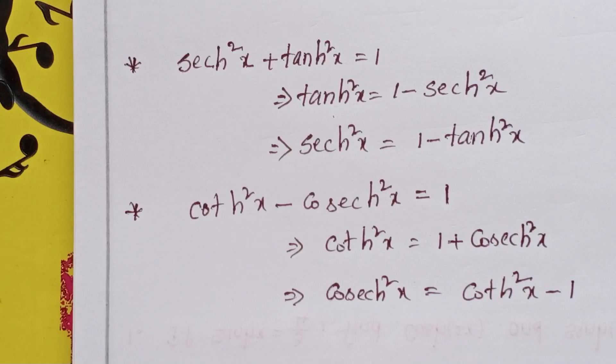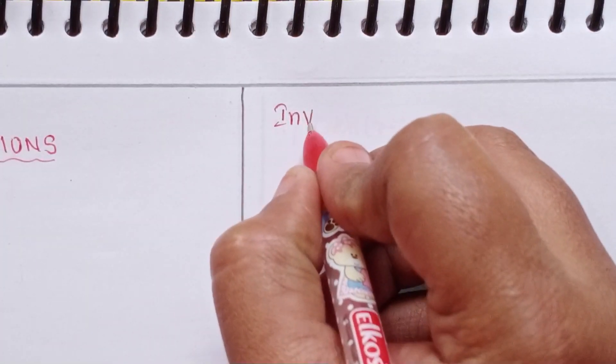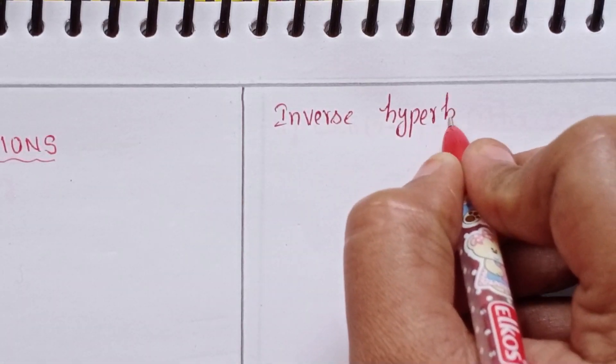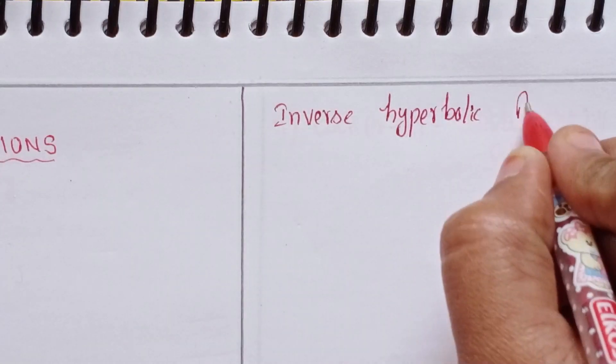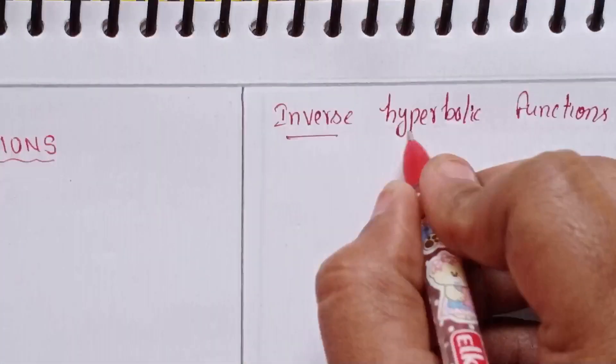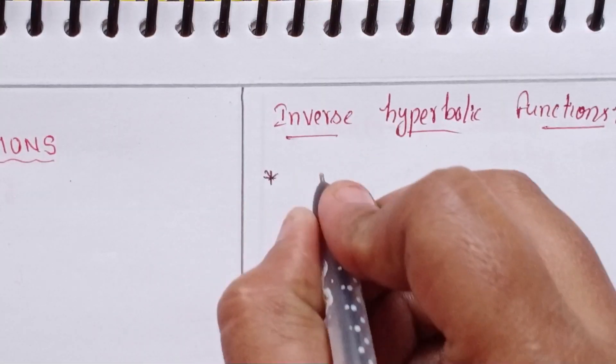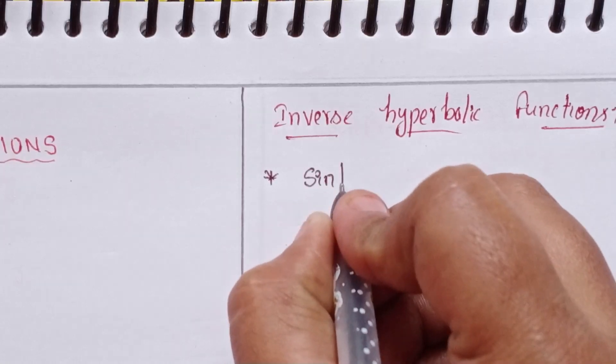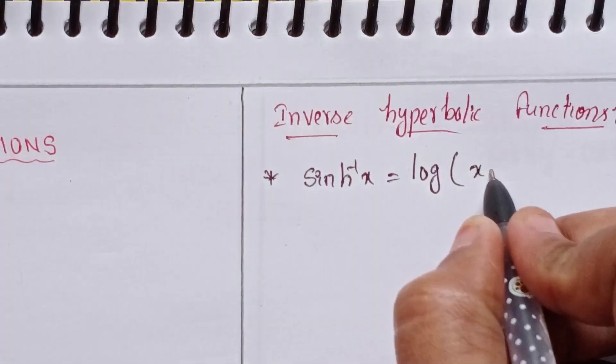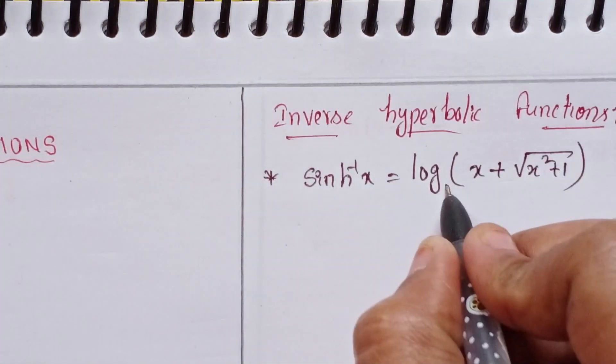Next, inverse hyperbolic functions. Sinh inverse x equals log base e of x plus root x squared plus 1, for all x belongs to R.